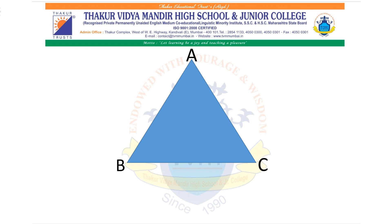For any triangle we can take any side as the base. Let us first take BC as the base for triangle ABC. If BC is the base, then the height will be drawn from the opposite vertex A. As you know, height is a perpendicular drawn from the vertex to the opposite side. So AD is the height of triangle ABC when BC is the base.